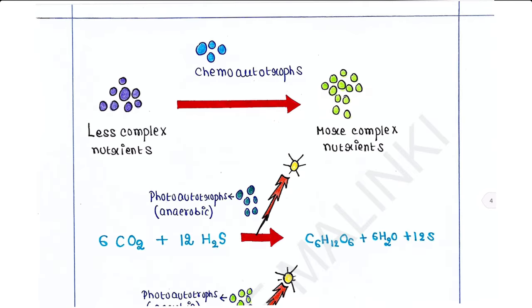Some cells used less complex nutrients and synthesized more complex nutrients. They are called chemoautotrophs. Autotrophs are those cells who can make their own food. These cells converted less complex chemicals into more complex chemicals. Therefore, they are chemoautotrophs because they get their food from chemical sources.